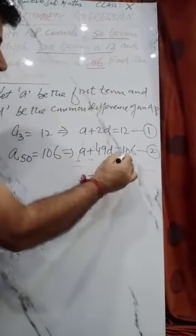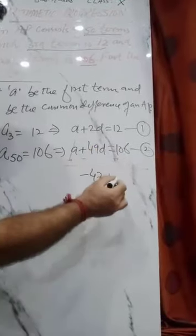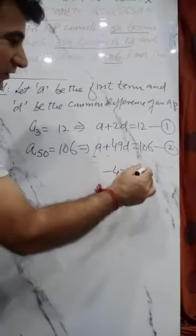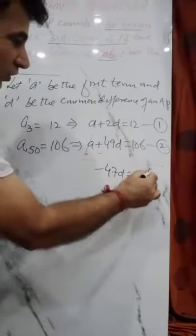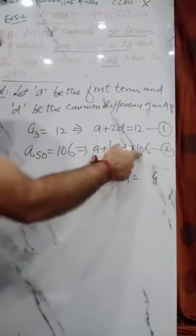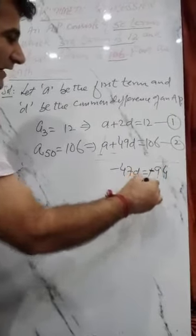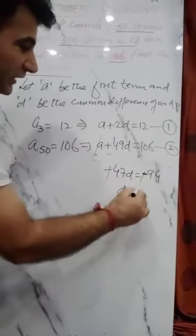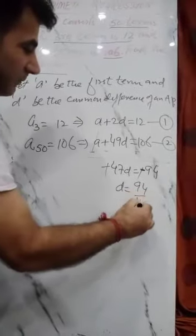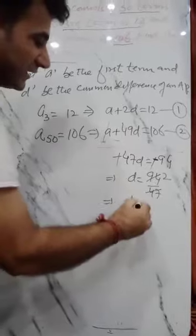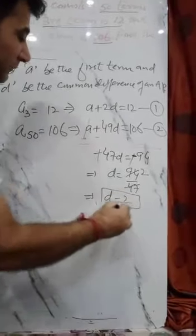Minus 49d minus 2d, how many? Minus 47d. And 106 minus 12, we get 12 minus 106, that's minus 94. So minus signs cancel. d value is 94 upon 47, so d comes out to be 2. So common difference is 2.